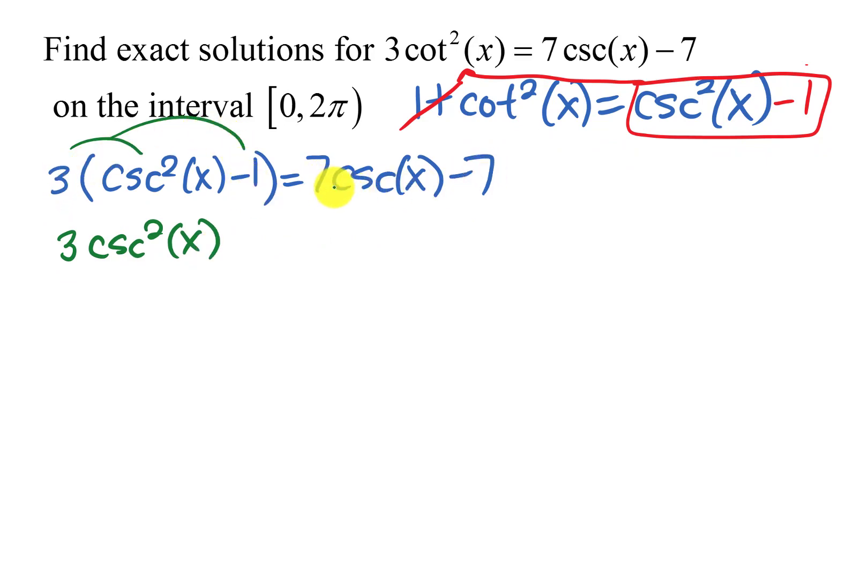So I'm going to wait on that one and I'm going to move this 7 cosecant x over. 7 cosecant x subtract there. And then I'm going to add 7 to both sides and I also have this minus 3. So that's going to make that a plus 4 equals 0.